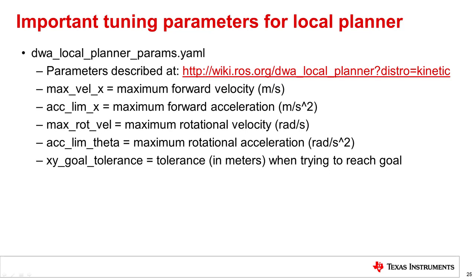Several important parameters involve the velocities and accelerations of the robot. The maxvel_x parameter is the maximum forward velocity in meters per second. The acclimx is the maximum forward acceleration in meters per second squared. These parameters which control the forward velocity and acceleration will determine how smooth or jerky the forward movement of the robot is, as well as how fast it can react to obstacles. For instance, if the robot is moving very fast, it has less time to react to a dynamic object placed in its path.